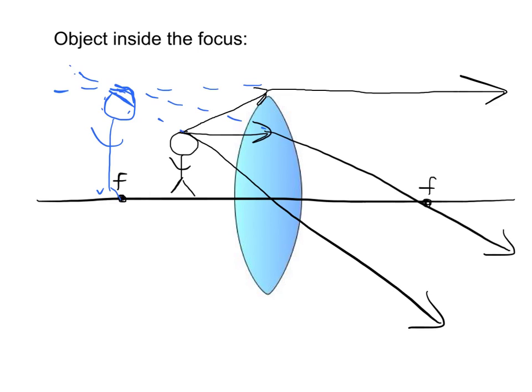If that image is formed by rays that appear to meet but don't really, we call that a virtual image.